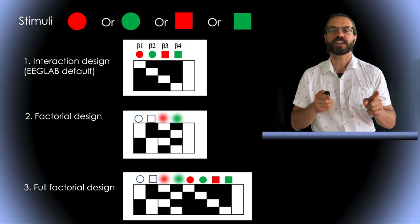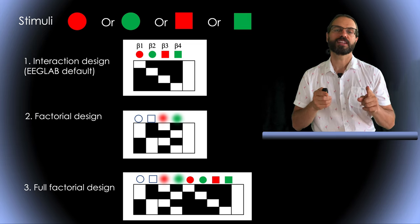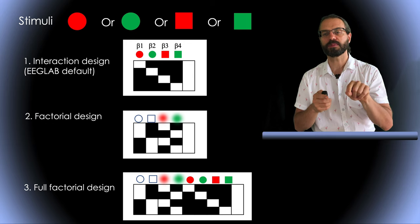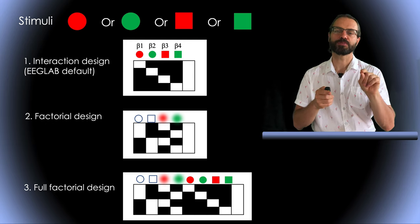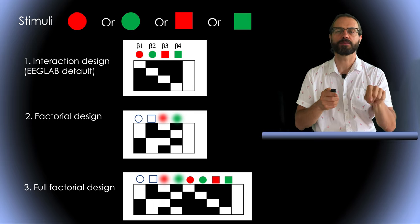With this design, you can still compare between red and green stimulus by summing betas. For example, the difference between red and green would be beta1 plus beta3 minus beta2 and beta4. The difference between square and circle would be beta1 plus beta2 minus beta3 and beta4.